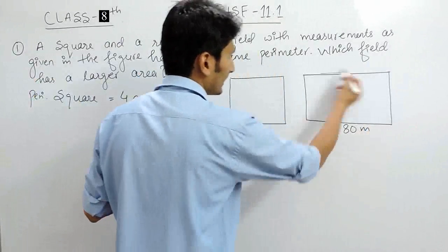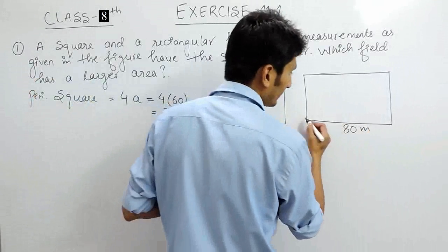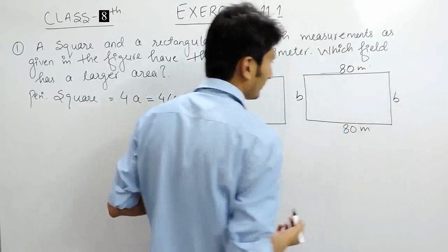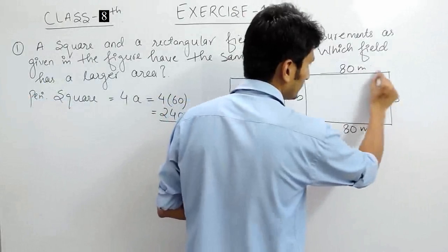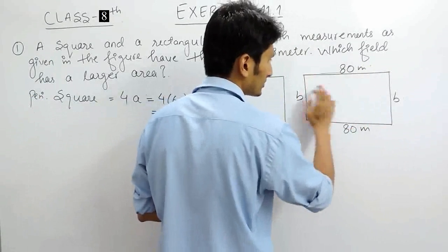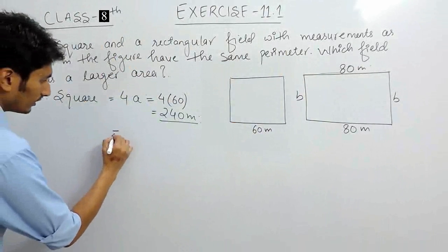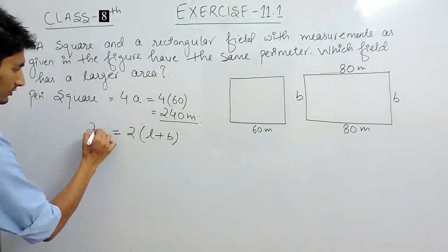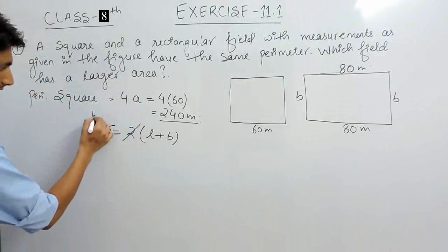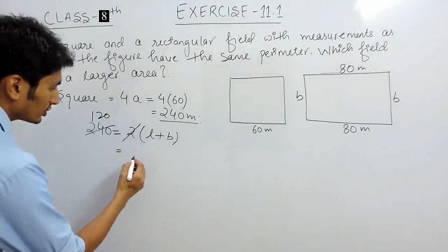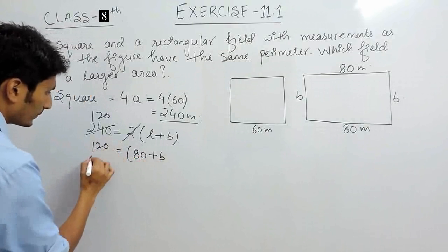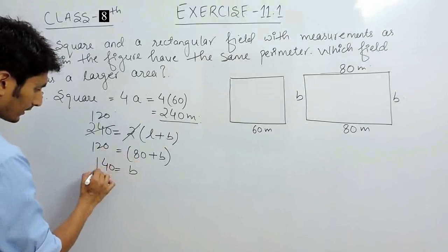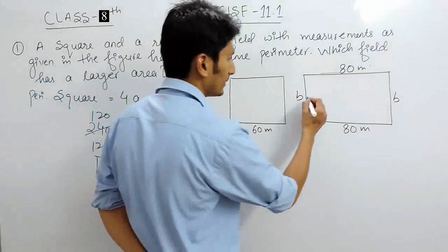Now we know that the perimeter of this rectangular field is equal to the perimeter of the square field. The length is 80 meters, and the perimeter formula is 2 times length plus breadth. Setting this equal to 240: 2 into (80 plus breadth) equals 240, so length plus breadth equals 120. Therefore breadth equals 120 minus 80, which is 40 meters.